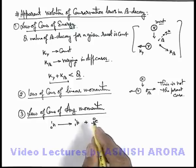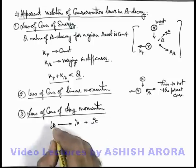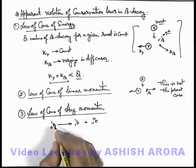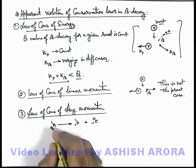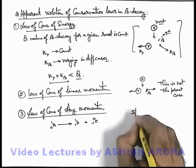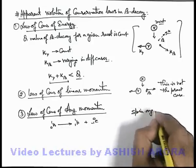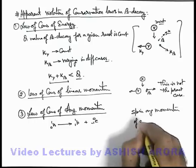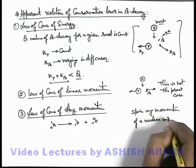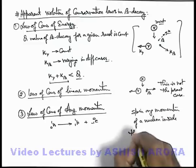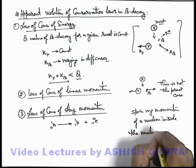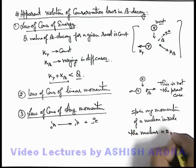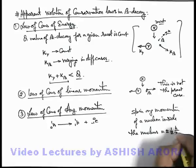So inside the nucleus, it is well proven that every nucleon has some spin angular momentum. And spin angular momentum of a nucleon inside the nucleus is given as plus minus half h over 2 pi.